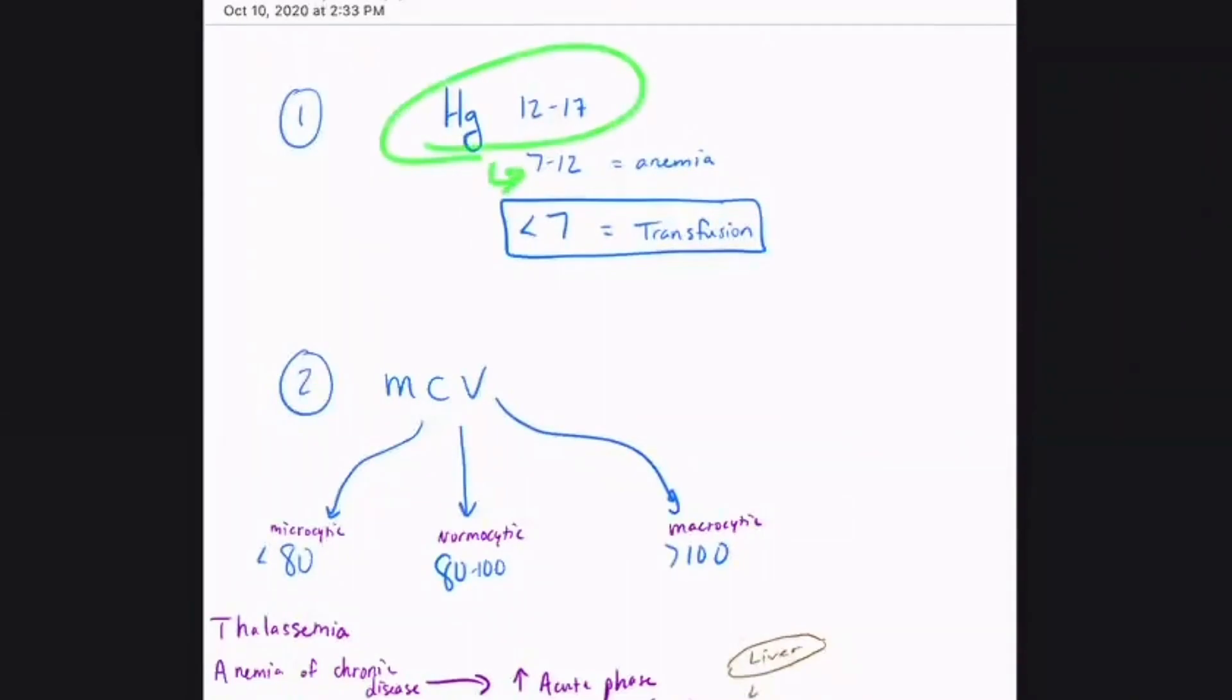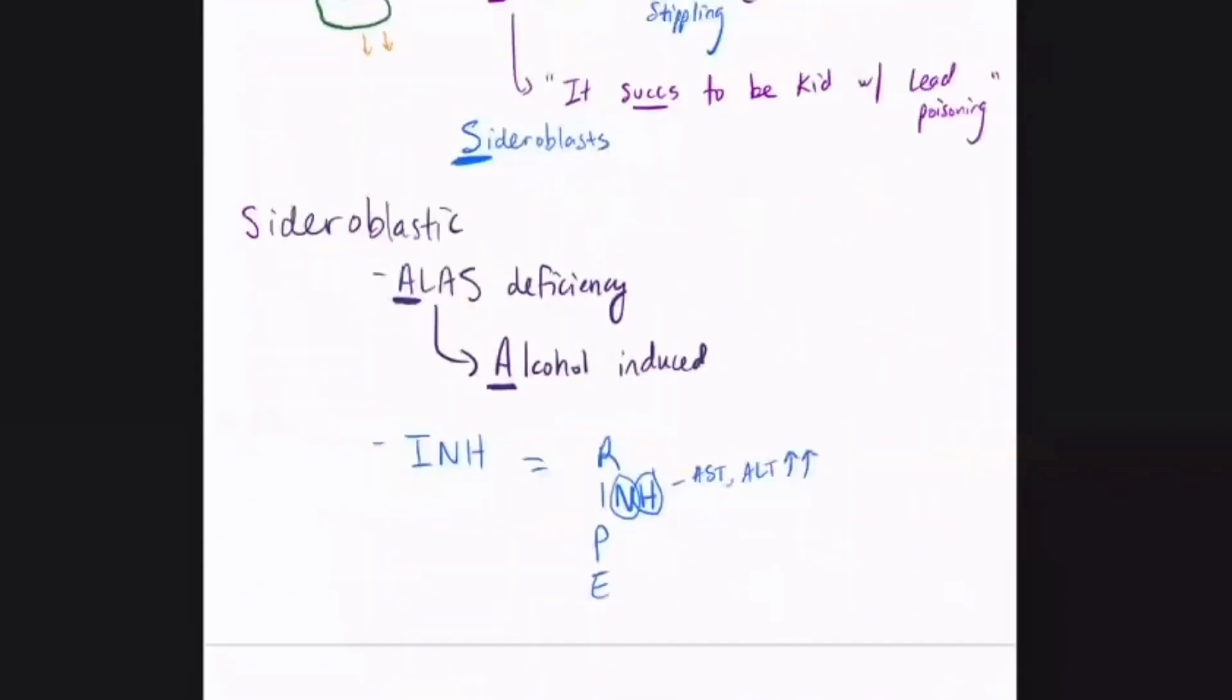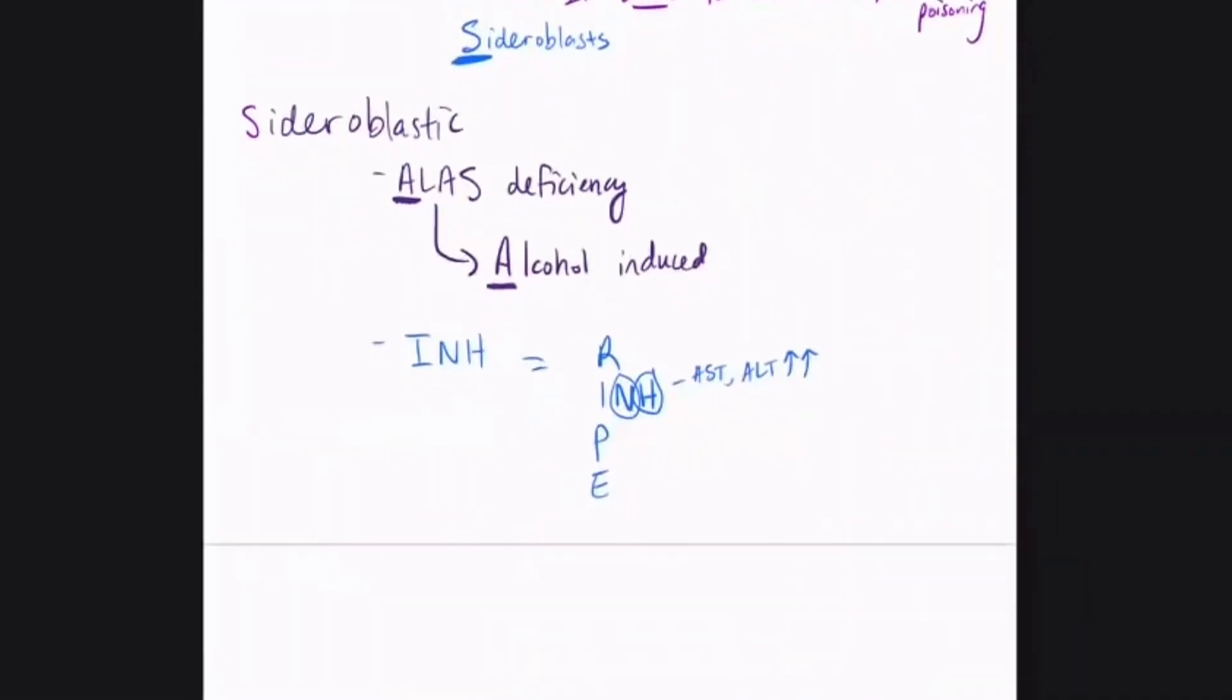going back to the top here, you got low hemoglobin. So say somebody has seven to twelve hemoglobin, then they're not delivering enough oxygen, so they're going to get dyspnea, which is difficulty breathing. That's how you can start tying these clinical presentations together when you understand the physiology.